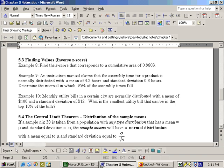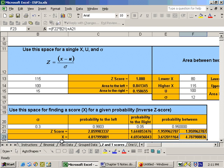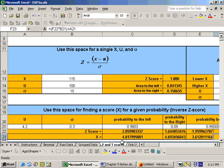So we would go to the Excel sheet, and we would put in our mean, which is 100, our standard deviation, which was 12.